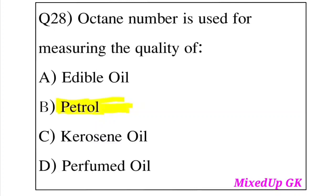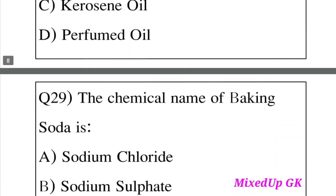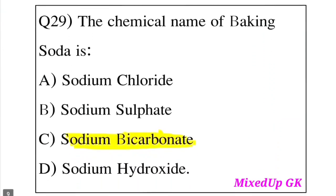Question 29: What is the chemical name of baking soda? Option A: Sodium chloride. Option B: Sodium sulfate. Option C: Sodium bicarbonate. Option D: Sodium hydroxide. The answer is Option C, Sodium bicarbonate. Sodium bicarbonate is the chemical name of baking soda.